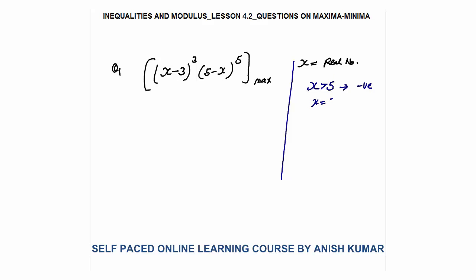If x is equal to 5, the product becomes 0, which is again not the maximum value. If x is less than 3, the first term (x minus 3) cube becomes negative, while (5 minus x) is positive, so the overall product will again be negative.